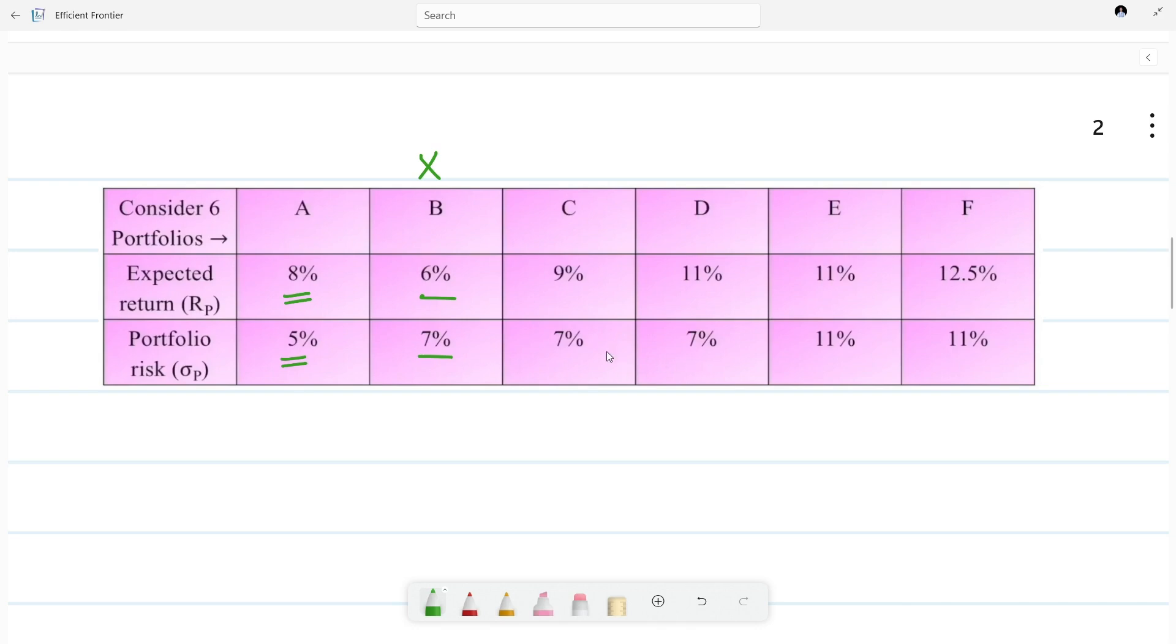For D, risk levels are the same but return is higher, so we won't be taking C also. For E, from 7% to 11% risk, although risk has increased, return is the same. So we won't be taking E also.